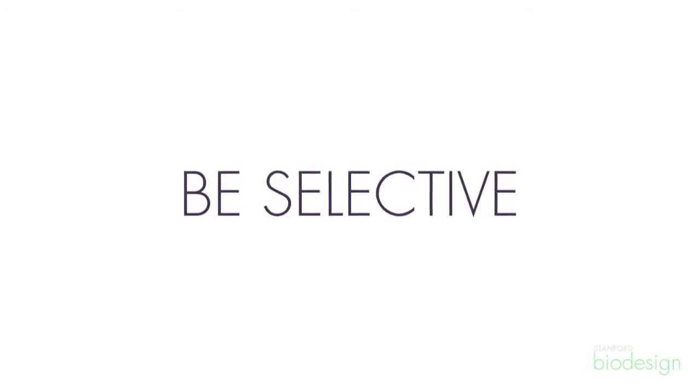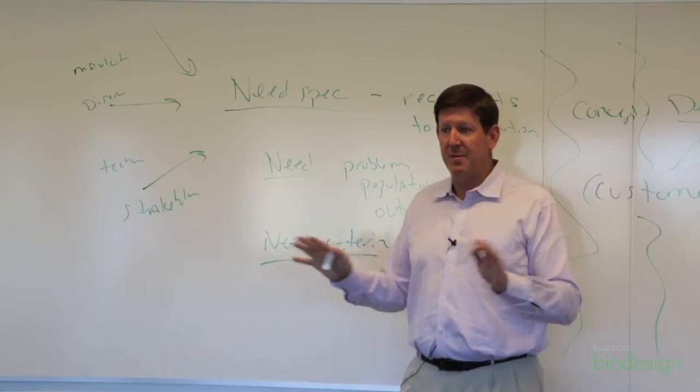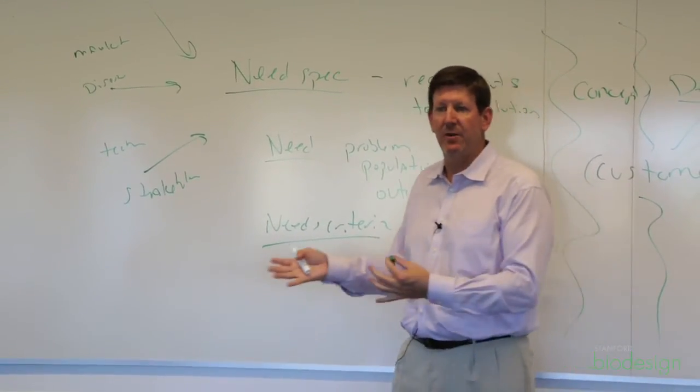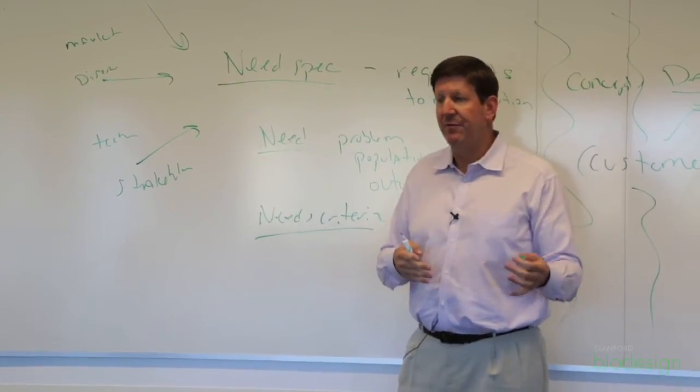All these needs criteria have to be black and white. And you don't need to make one up if it doesn't matter. In other words, you don't have to say I got to have five on each of these categories of must haves and want to haves. I don't need to have five if there's not five to have.